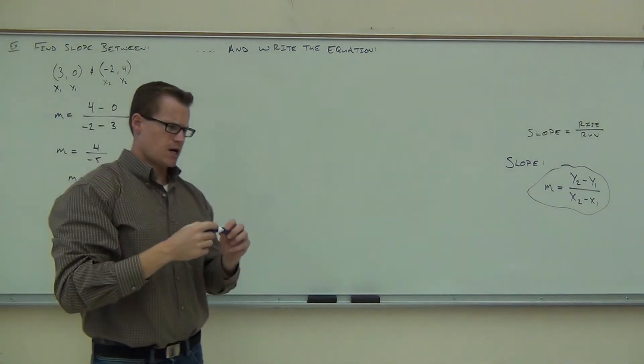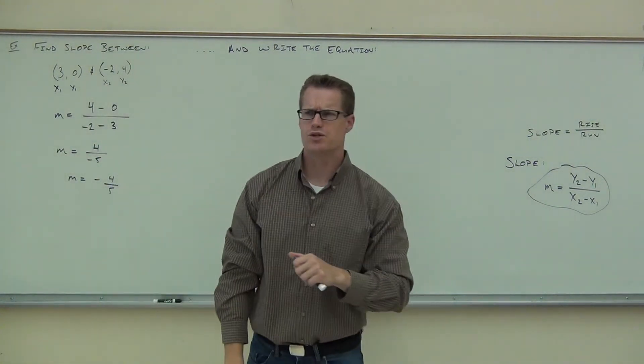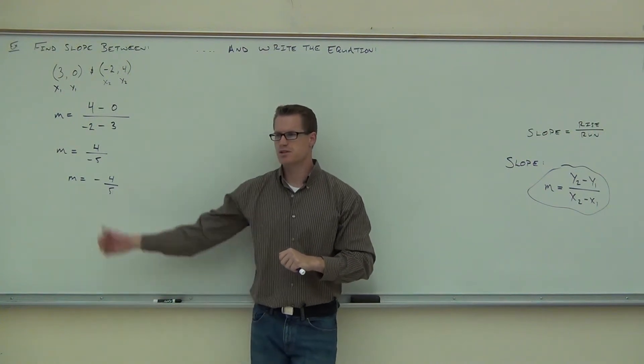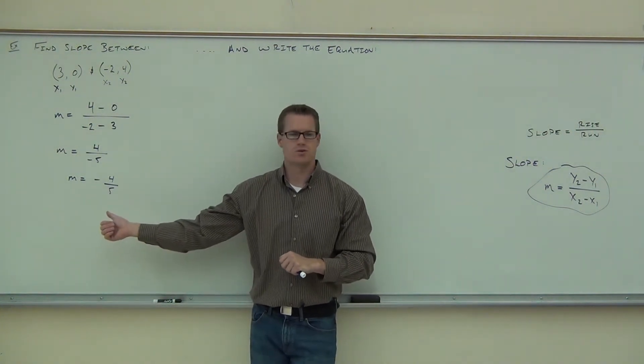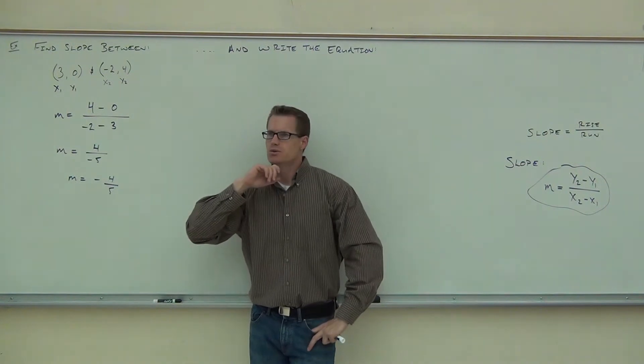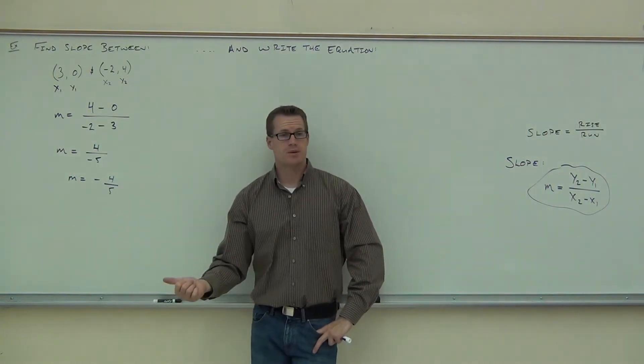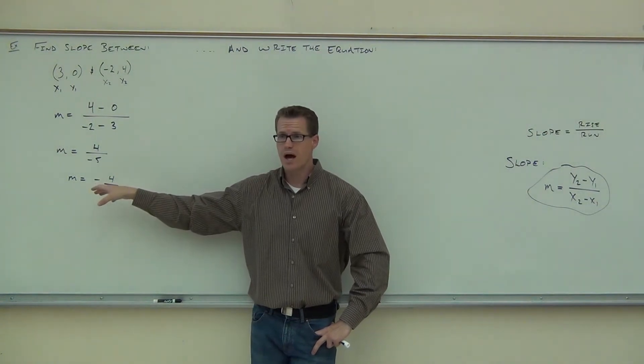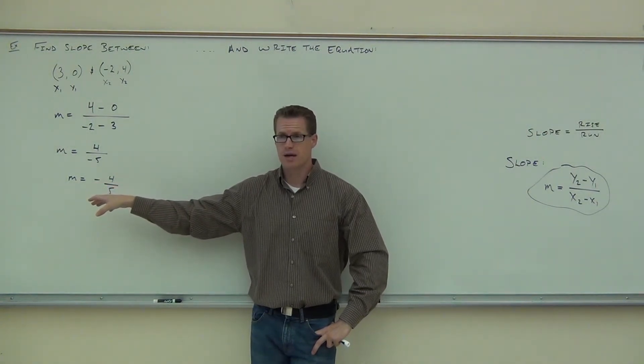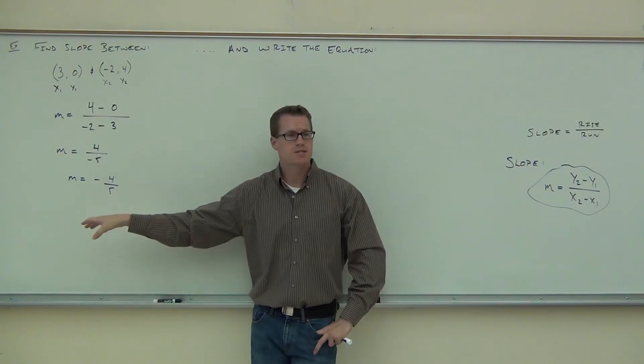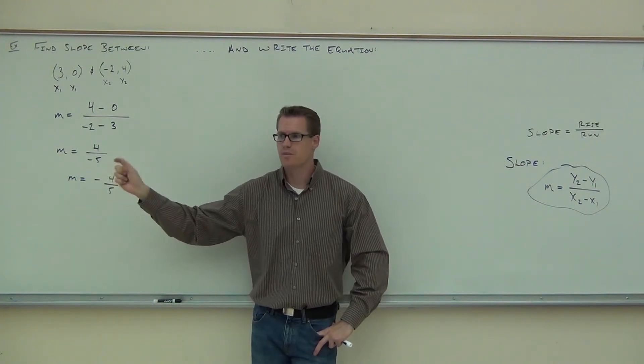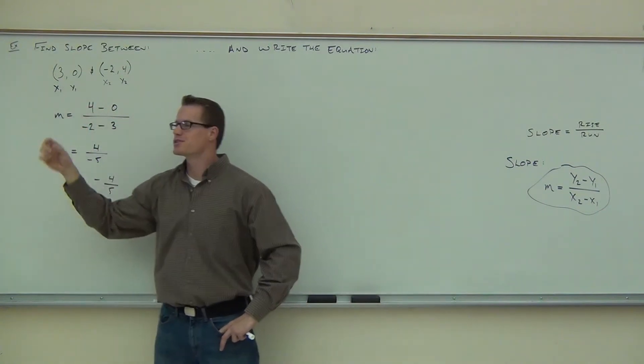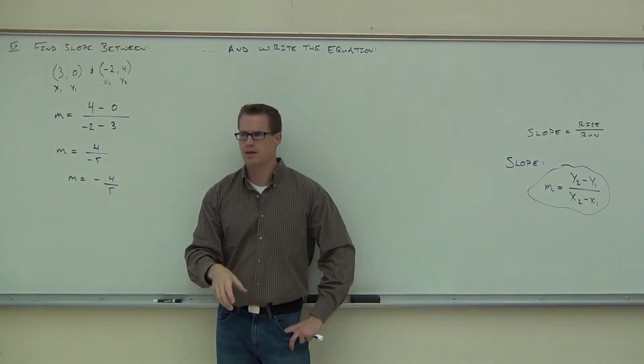So let's go through this. Do you think this is going to be a horizontal line? No. Horizontal line would have a slope of 0. Can I use slope-intercept? To use slope-intercept, you have to have the slope, which we have now, but you also have to have the y-intercept. Do you have the y-intercept? No.